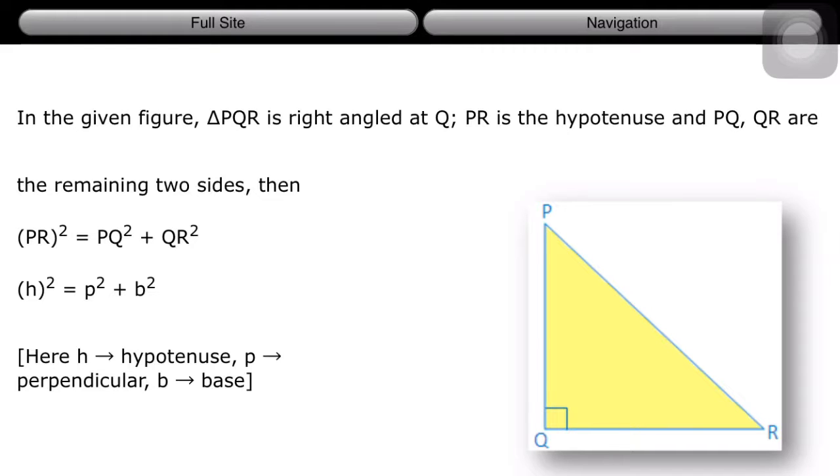That means h² = p² + b², where h is the hypotenuse, p is the perpendicular, and b is the base.